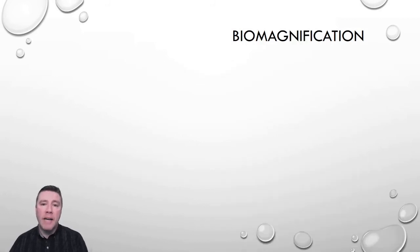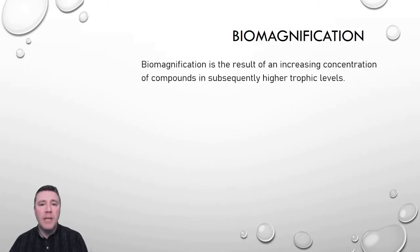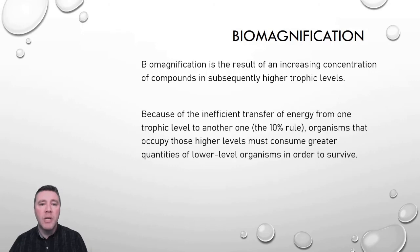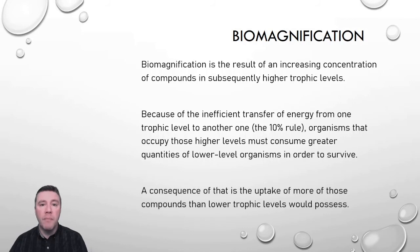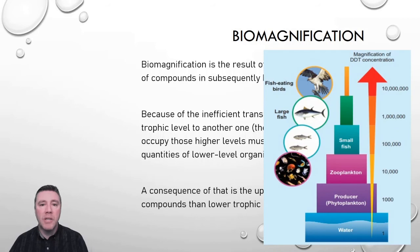The second concept is biomagnification. Biomagnification is the result of increasing concentrations of those compounds as we go up subsequently higher trophic levels. The reason why this occurs is traced back to the 10% rule. Because organisms only obtain a small percentage of the energy from trophic levels below them, they need to eat greater numbers of those lower trophic level organisms to get the energy they need to sustain their life. That also means they're going to be consuming more and more of whatever toxic compounds those lower trophic level organisms possess.